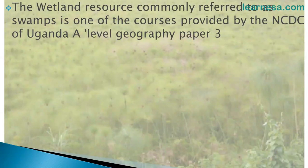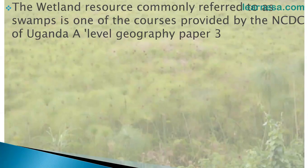The wetland resource, commonly referred to as swamp, is one of the courses provided by NCDC of Uganda in the A-level Geography Paper 3J. Therefore it is examinable at UNEB Paper 3 final exam for Senior Six. This course is taught in Senior Five and we keep revisiting it up to Senior Six to stay updated on the wetland resource of Uganda.